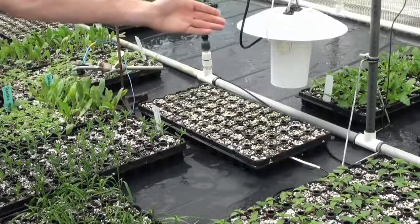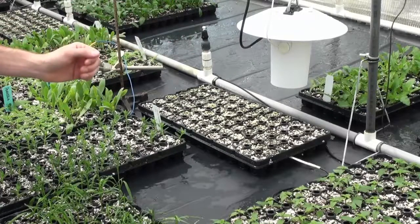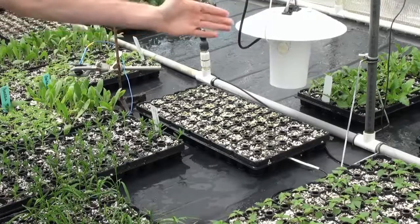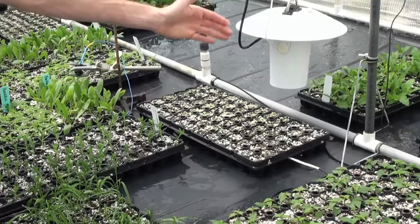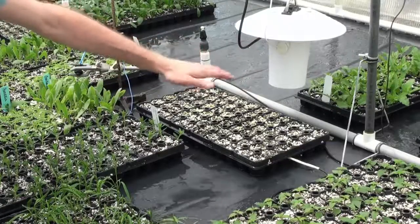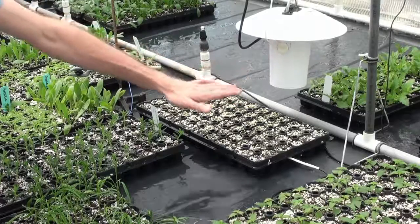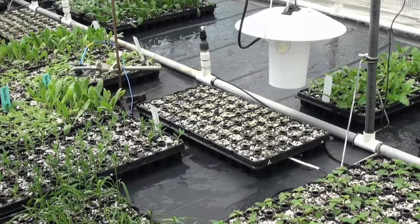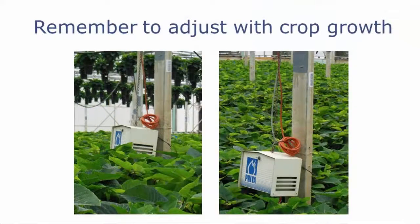Lastly, we have an aspirated radiation shield which is measuring canopy temperature or temperature within this propagation environment. This aspirated radiation shield is drawing air from the bottom with this fan mounted on top, so we're getting a more accurate measurement of the canopy air temperature. If used in the greenhouse, you can mount these with chain and are able to increase the height of these aspirated radiation shields as the crop grows.